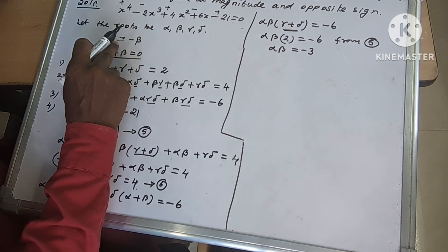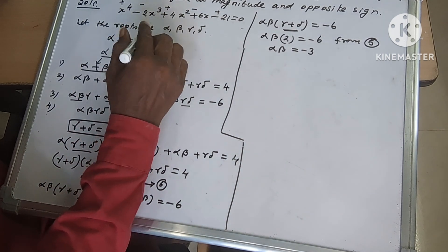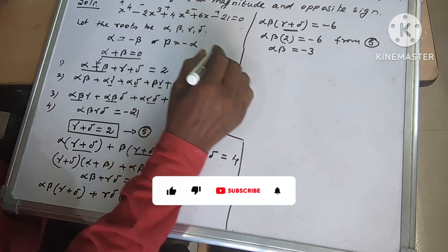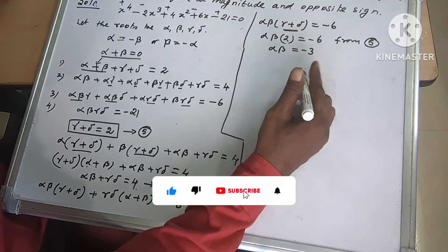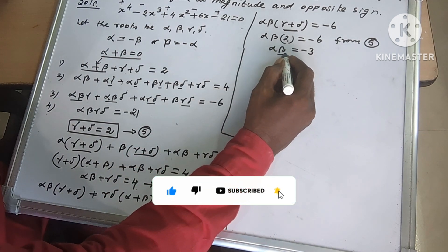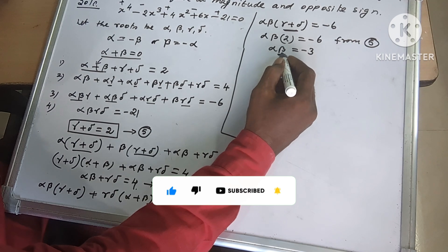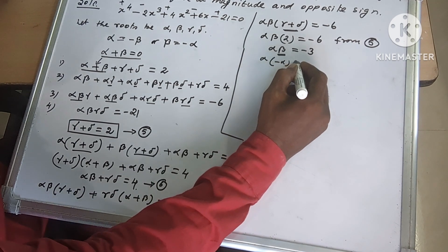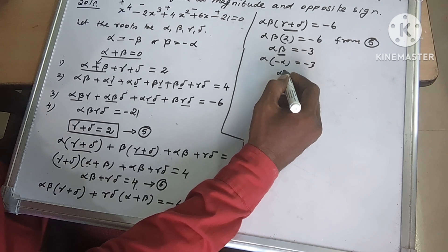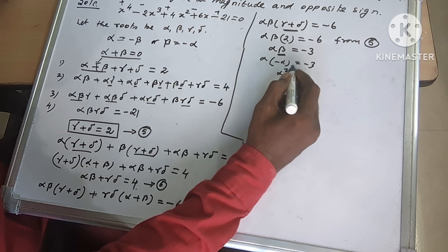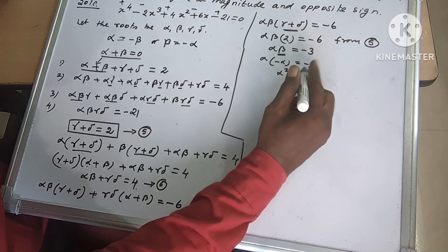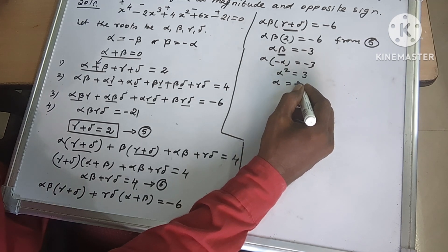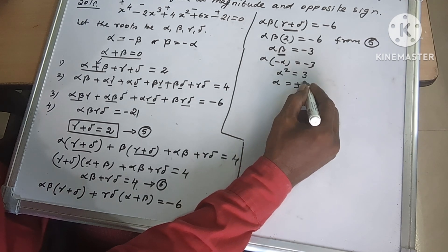Alpha·beta is minus 3. But beta is minus alpha, so alpha times minus alpha equals minus alpha² equals minus 3. The minus cancels, so alpha² equals 3. Therefore alpha equals plus or minus square root of 3.